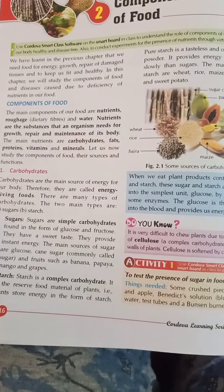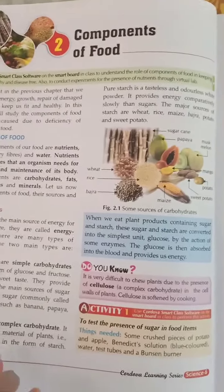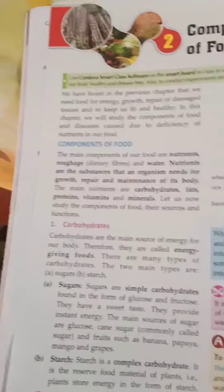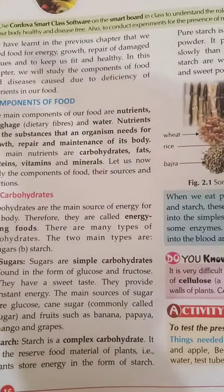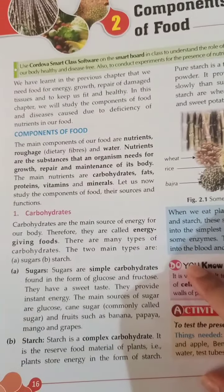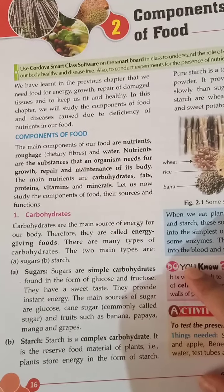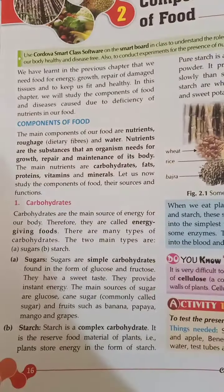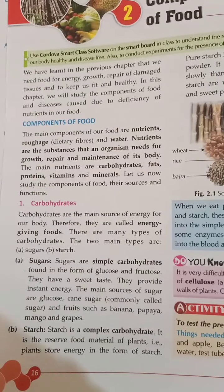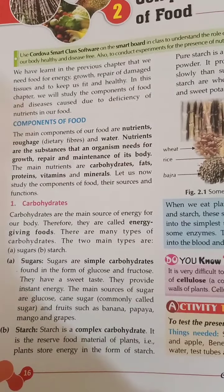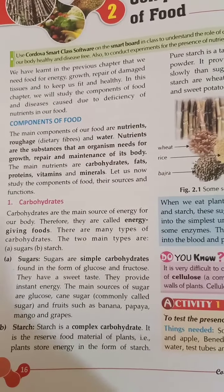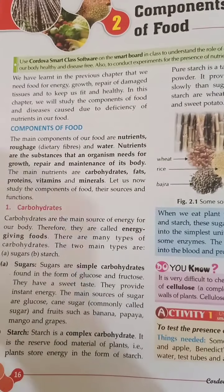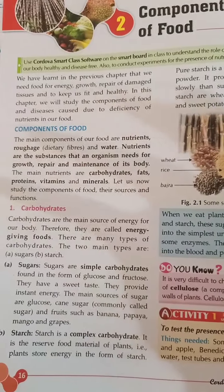The main components of our food are nutrients, roughage, and water. These are the three main components of food. Nutrients are substances that an organism needs for growth, repair, and maintenance of its body. In simple terms, nutrients are substances present in food that provide energy and help in repair, growth, and maintenance of our body.